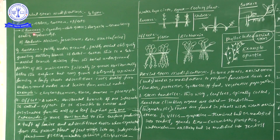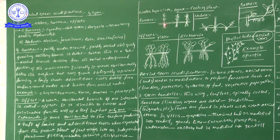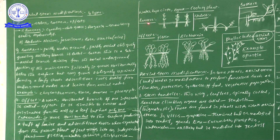Looking at the Runners diagram: just as in creeping grass, at nodal regions we find groups of adventitious roots, and at the aerial part we see the shoot system. If the main plant body is detached or separated, that individual plant can survive independently. Runners, Stolons, Suckers, and Offsets are all different types of stem modifications involved in vegetative propagation.